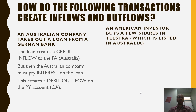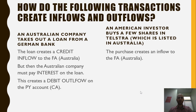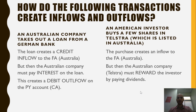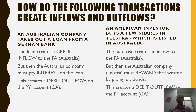An American investor buys a few shares in Telstra, which is listed in Australia. The purchase creates an inflow to the financial account in Australia because there is money coming into Australia for the purchase of shares — this is portfolio investment. But then Telstra must reward the investor by paying them dividends. This creates a debit outflow on the primary income account, which is in the current account. So we see an inflow of capital to buy the shares, and then an outflow — a financial outflow of dividends — on the current account.